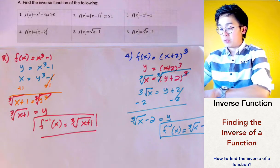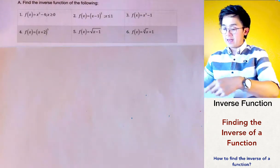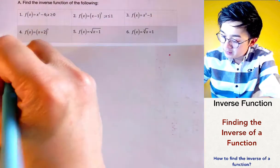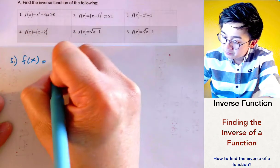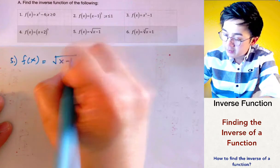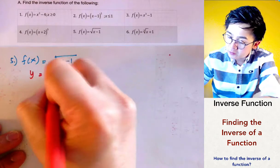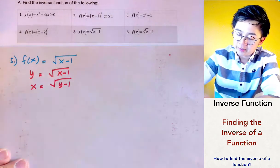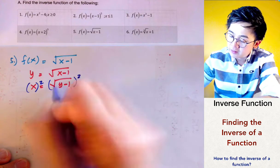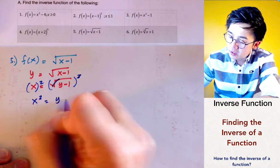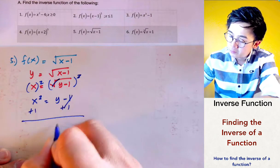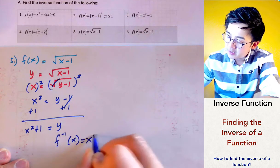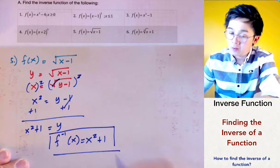For problem number 5, we have f(x) = √(x - 1). Rewriting as y = √(x - 1) and interchanging x and y helps us solve. Taking the square of both sides gives x² = y - 1, and adding 1 gives y = x² + 1. So our inverse function is f⁻¹(x) = x² + 1.